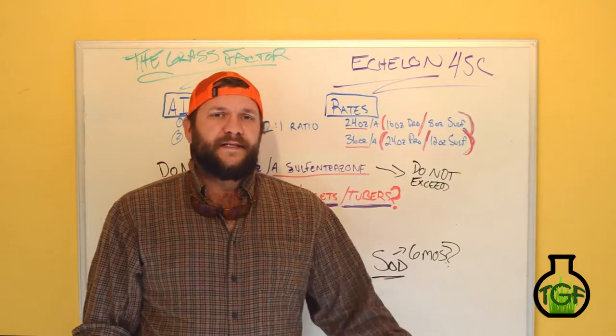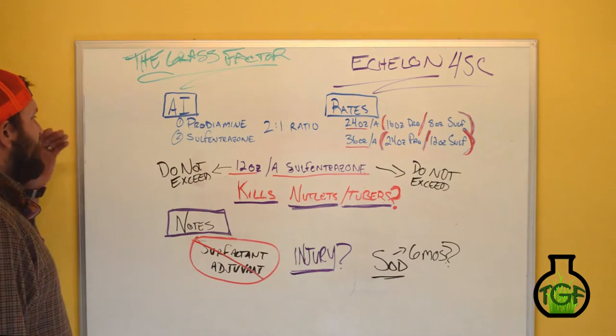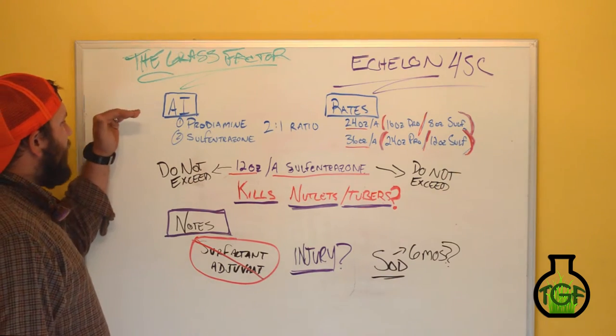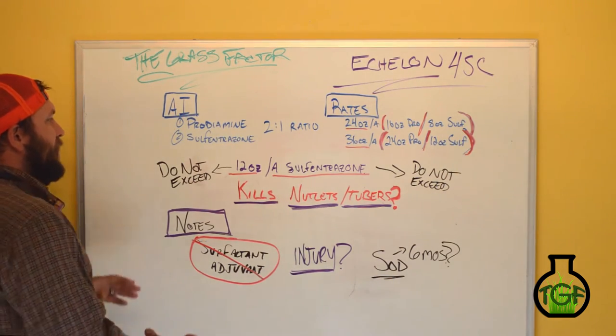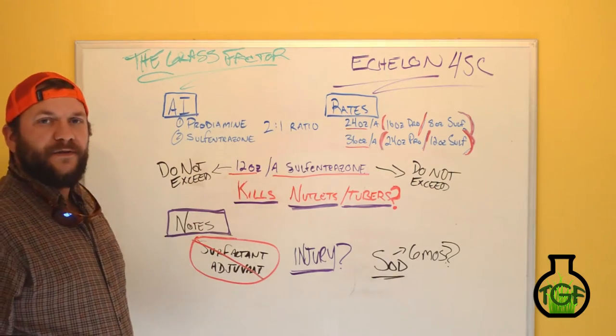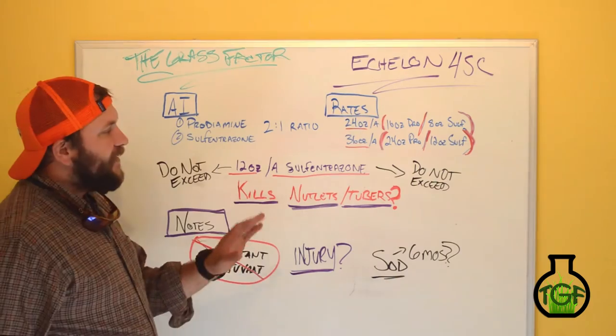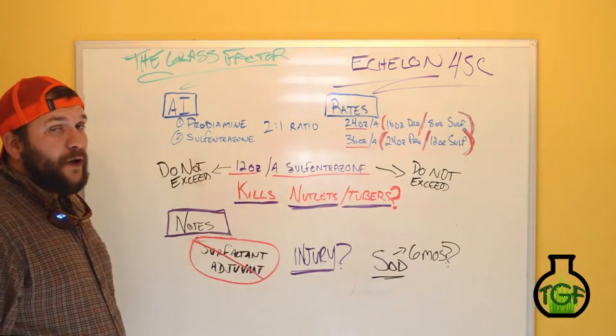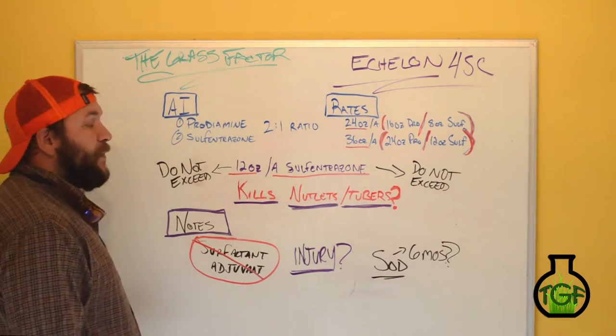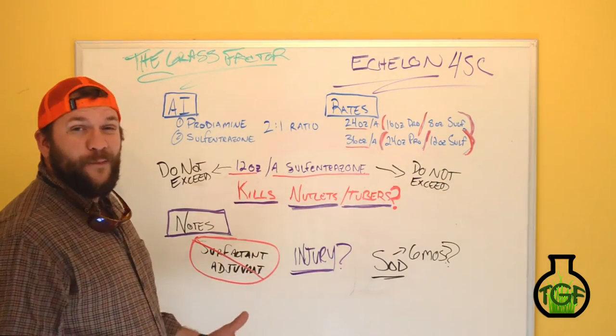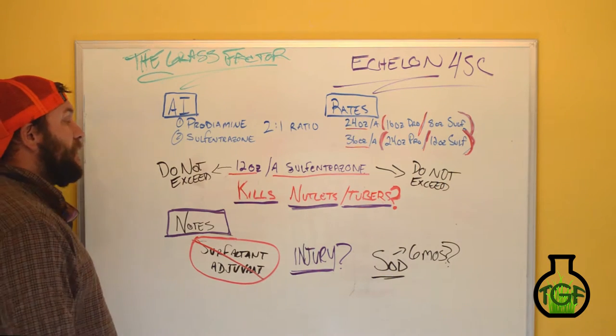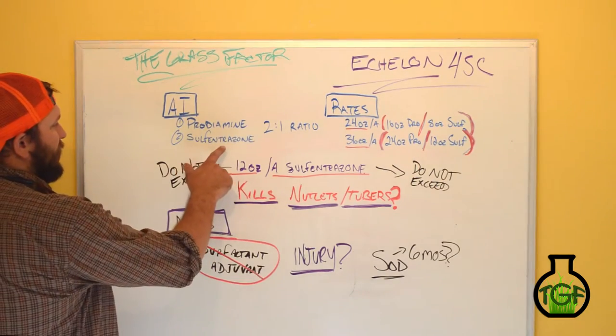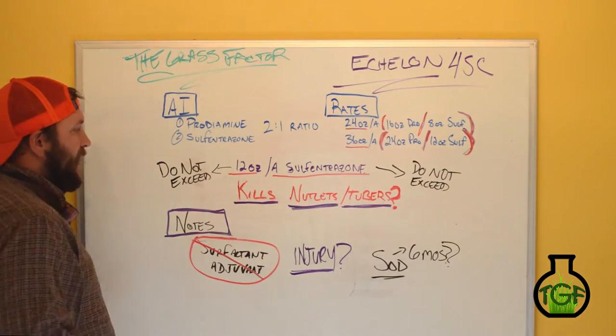Alright everyone, let's jump into what exactly is going on in Echelon. As far as active ingredients are concerned, not super overwhelming, it's nothing we haven't seen before. We've got Prodiamine and we've got Sulfentrazone. Together, this is going to make up four pounds of active material in each gallon of Echelon. If you're familiar with the Prodiamine label, it's four pounds of Prodiamine per gallon. Or if you're familiar with the Dismiss label, it's right at four pounds of Sulfentrazone per gallon of that product. We've got four pounds of AI here. The way they actually run it is one part Sulfentrazone to two parts Prodiamine.